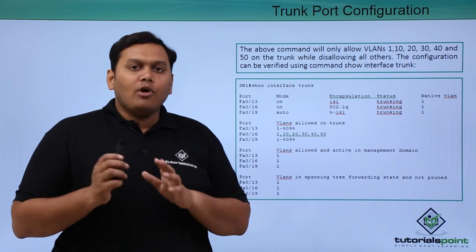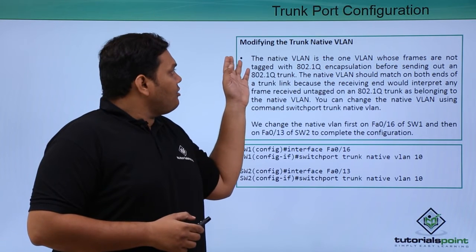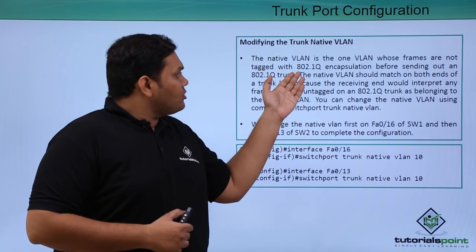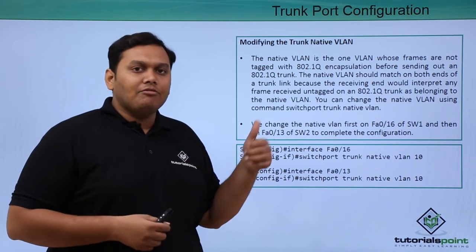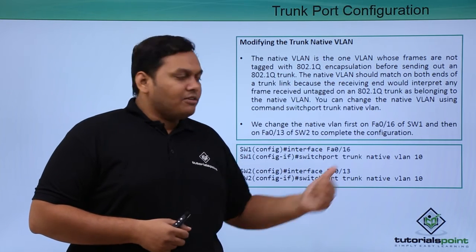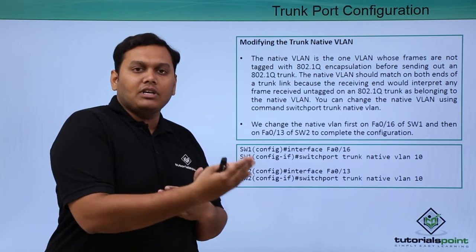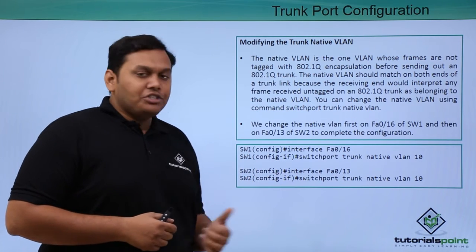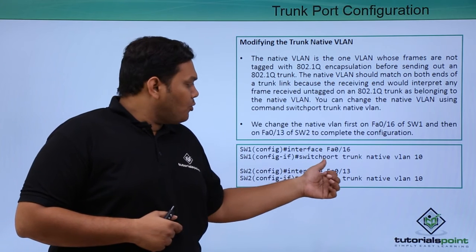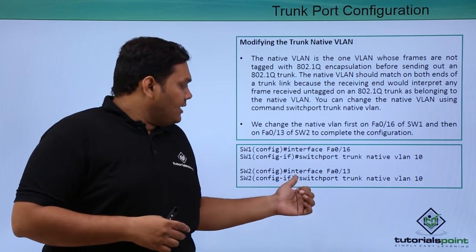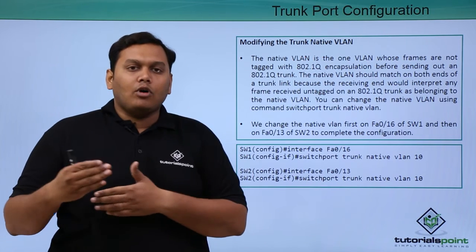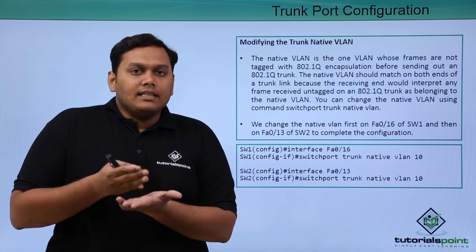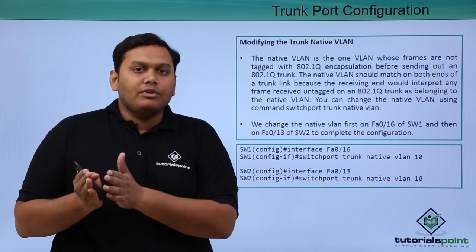Apart from this, you can also modify the native VLAN. Normally, frames sent with 802.1Q encapsulation do not have the header before going out on the trunk link. To modify the native VLAN, enter configuration mode, then interface mode, and enter the command switchport trunk native VLAN 10. This modifies the native trunk VLAN, and only VLAN 10 can access the trunk link.